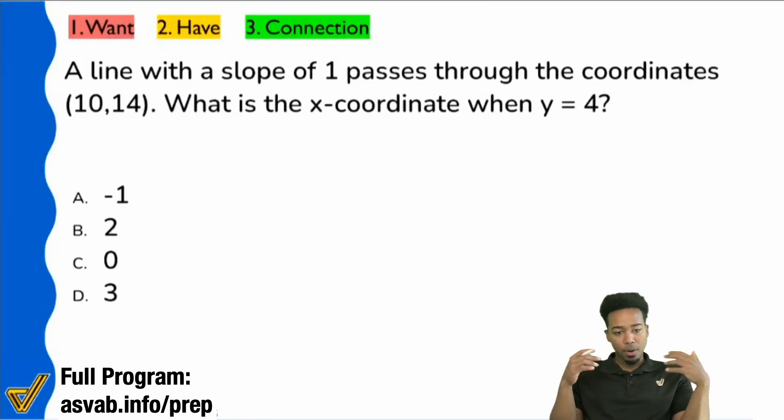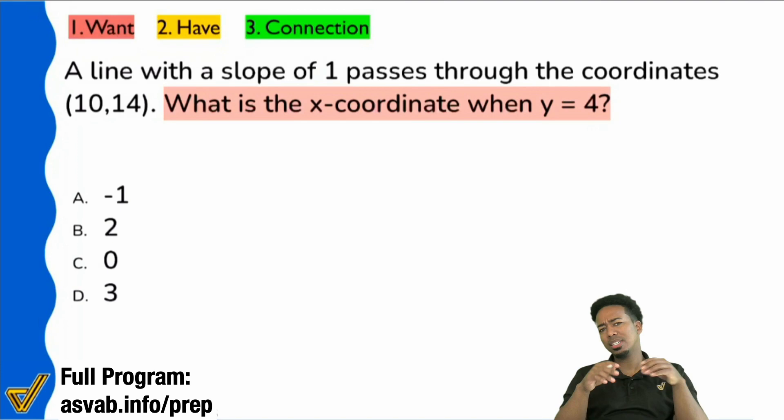So, my party people, from this question, whether it's a word problem or not, you always want to understand what the question's asking you to figure out. And the first thing you want to do is exactly that. Let's read the question. So it says, what is the x-coordinate when y equals 4?